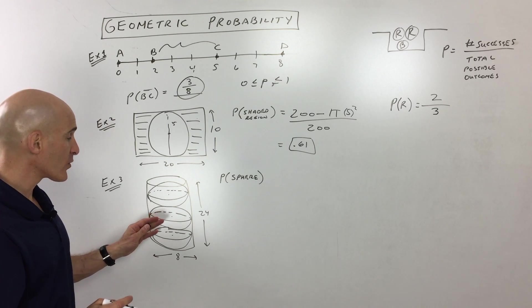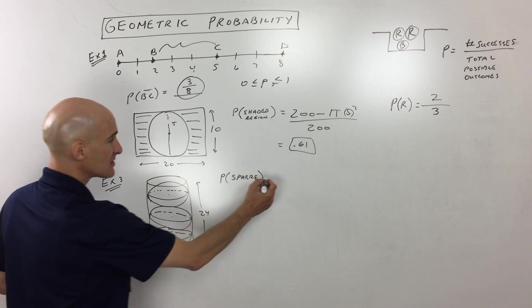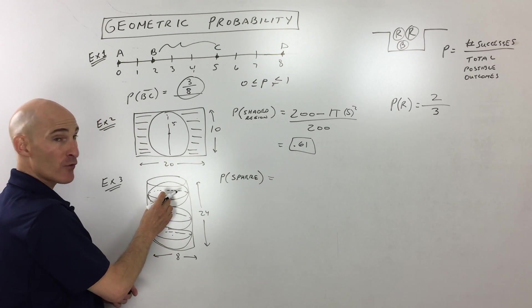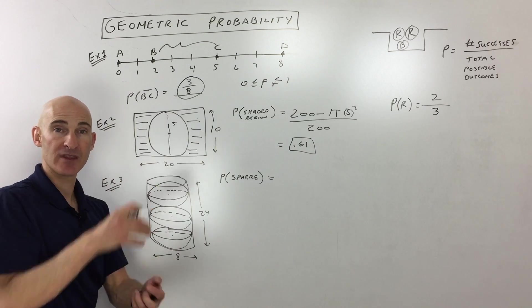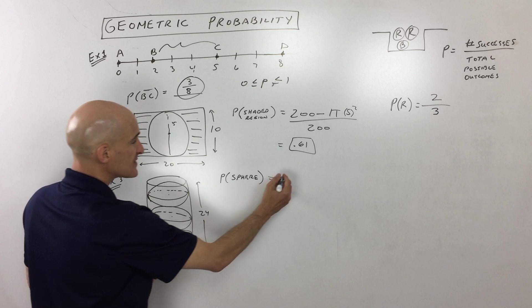So here, when we're talking about the volume of success, we're talking about the volume of one of these spheres times three, since there's three of them. So it's kind of like tennis balls inside of a cylinder, right? Well, let's see.